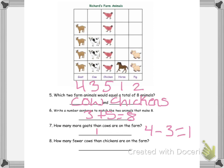How many fewer cows than chickens are on the farm? Well, we know that there's three cows, five chickens. So five minus three. So I'm going to count down five, four, three, two. So we know that there is two fewer cows than chickens that are on the farm.